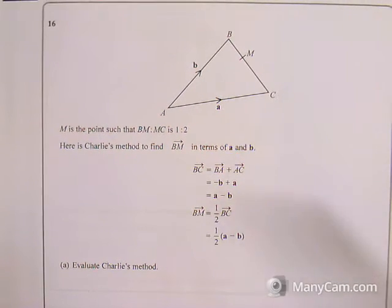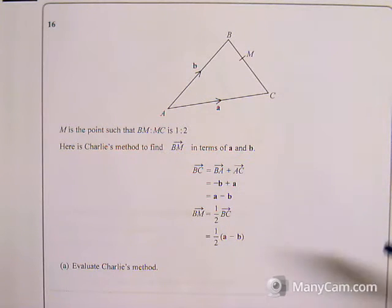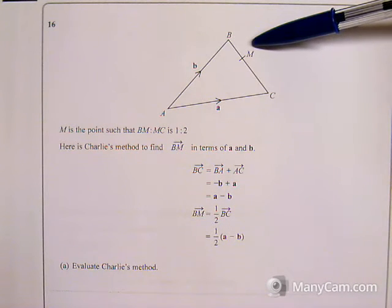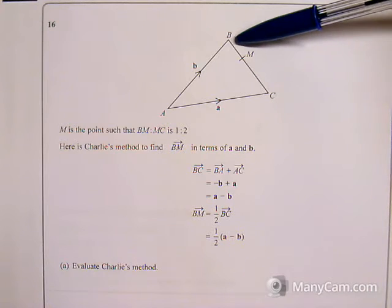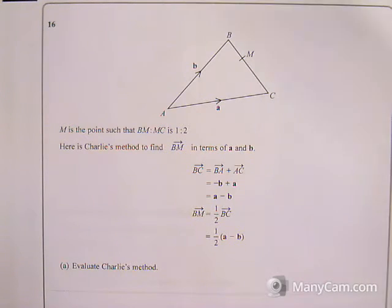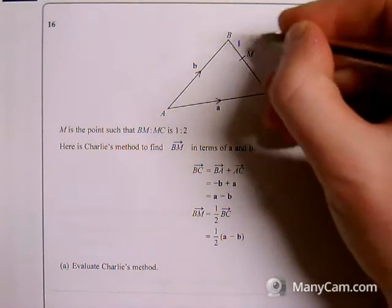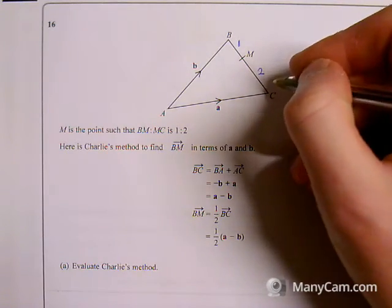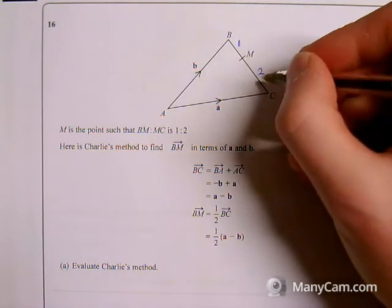For question 16, he's trying to go from B to M, and we're told that BM:MC is in the ratio 1 to 2. So this part here is 1, and that part there is 2 of this line in the ratio 1 to 2.